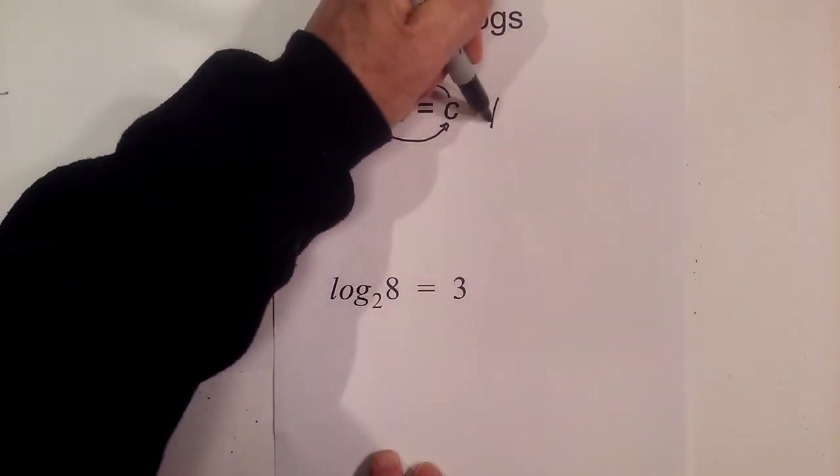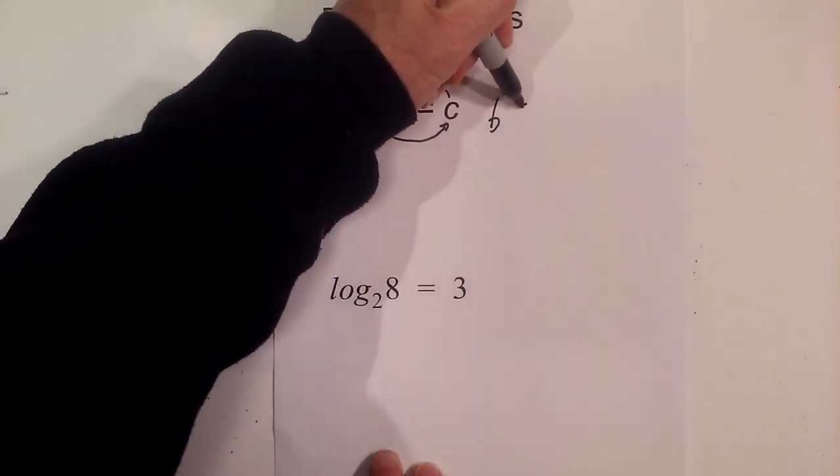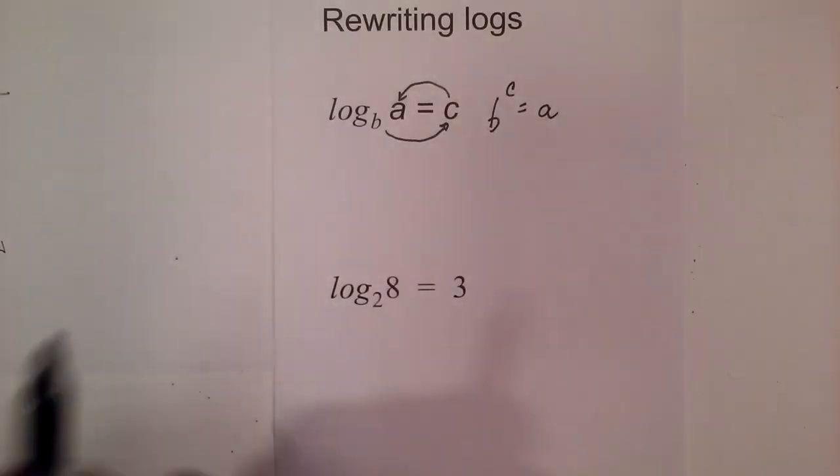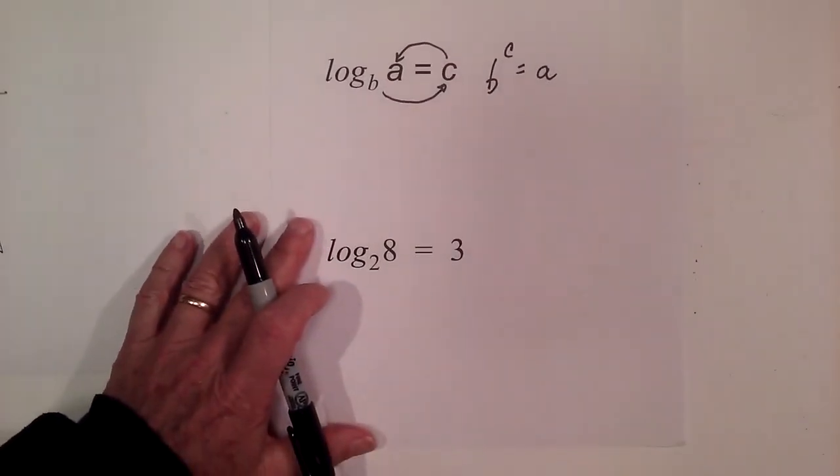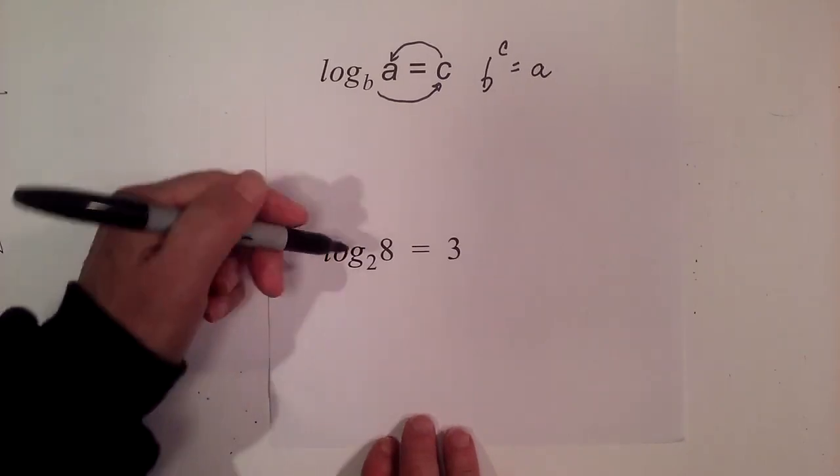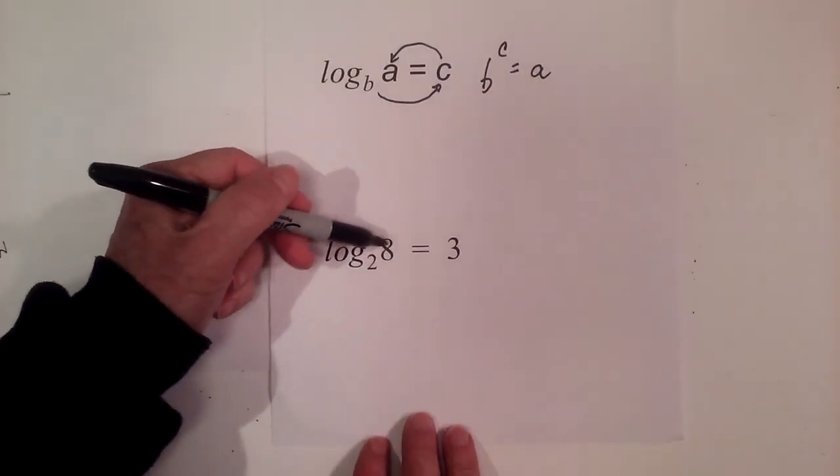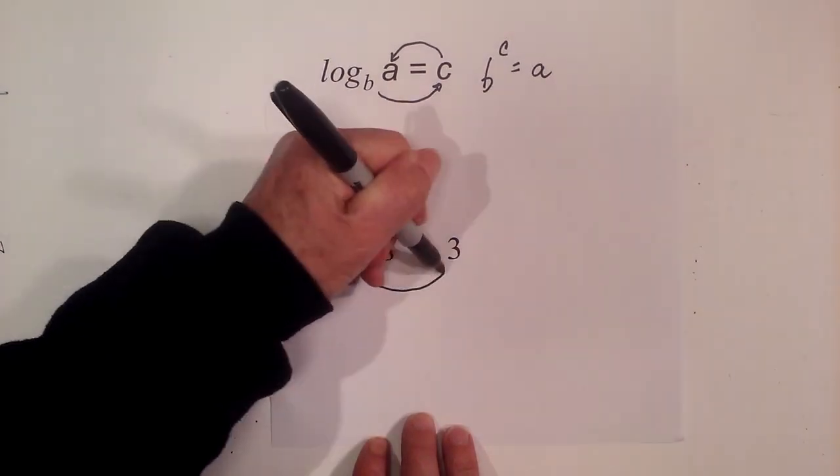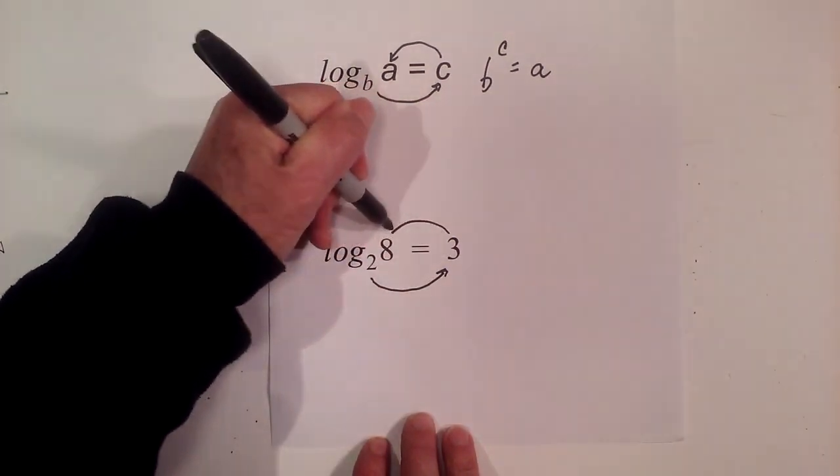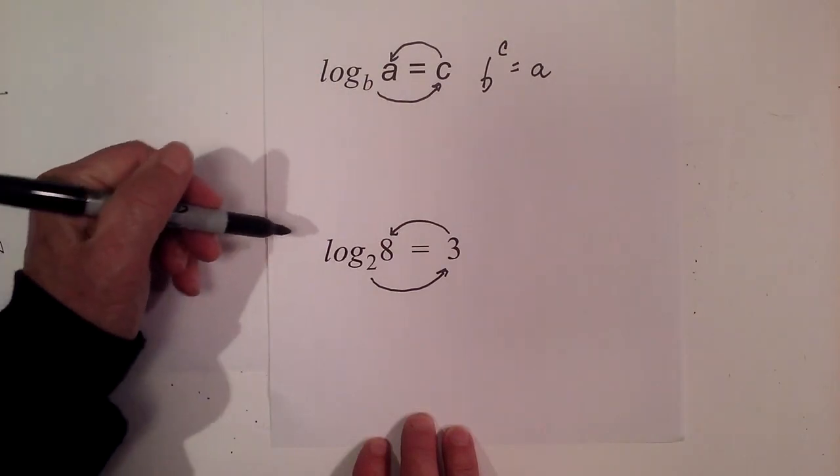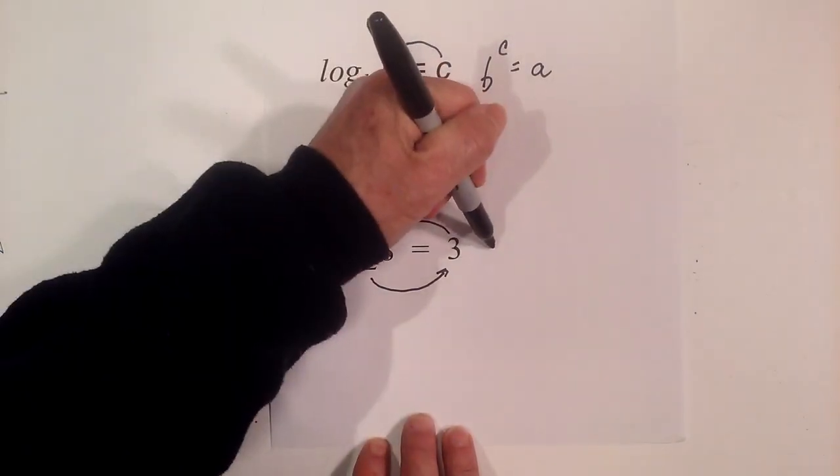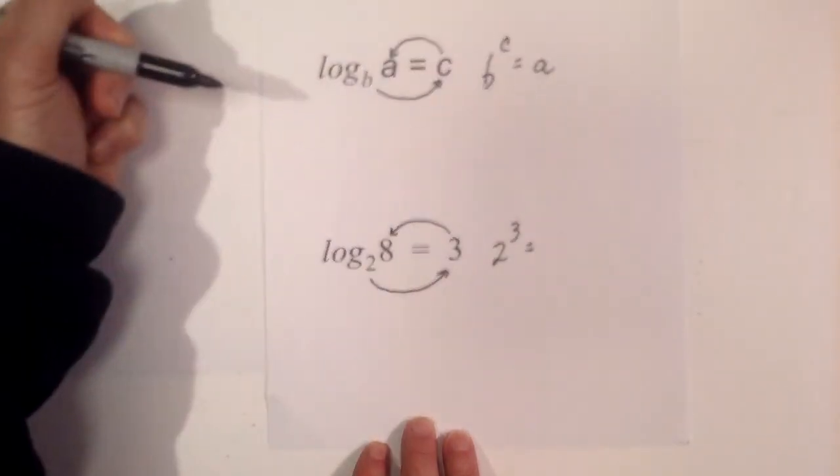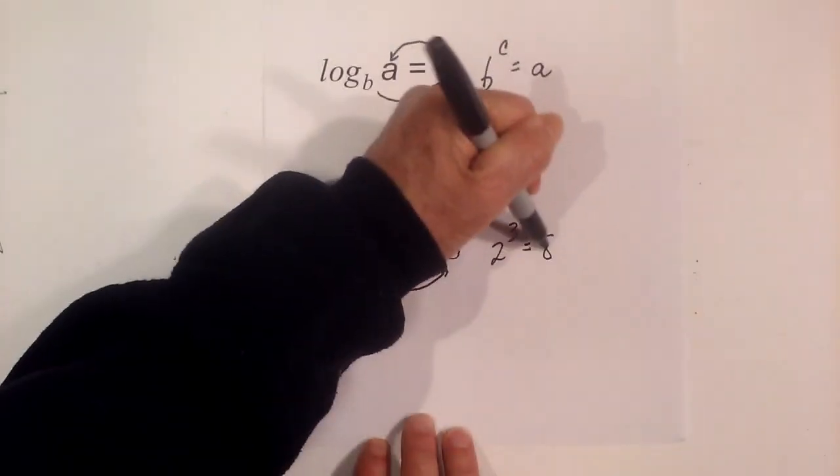Now let's apply this to another example. We have log base 2 of 8 equals 3. So we have 2 raised to the 3 equals 8. I'll just rewrite this: 2^3 = 8.